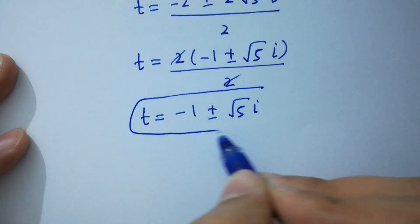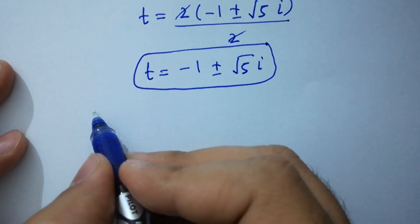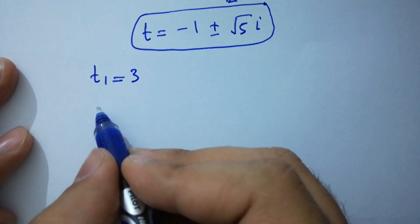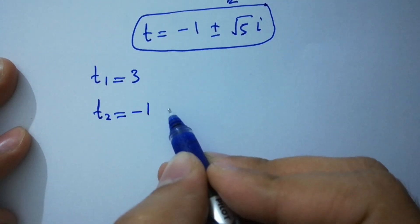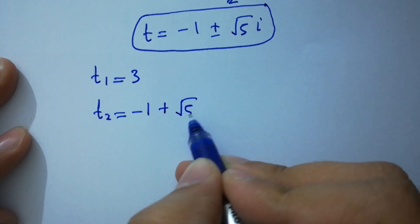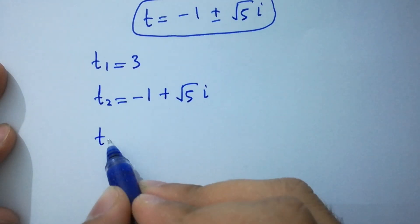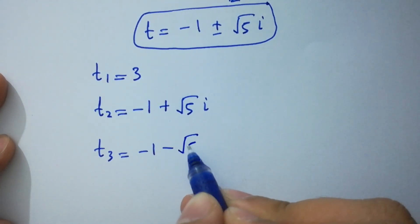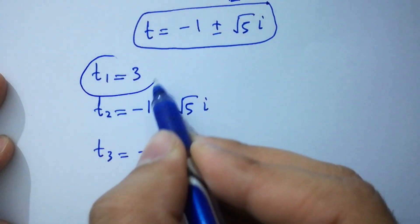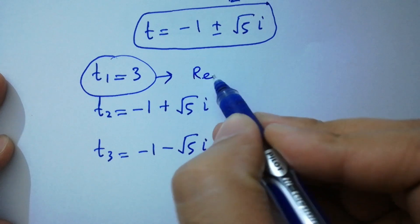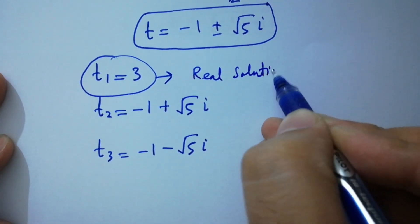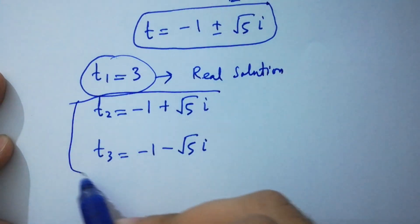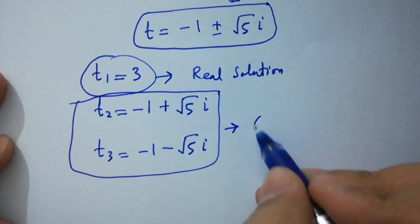So we have t₁ equals 3, t₂ equals minus 1 plus square root of 5 times i, and t₃ equals minus 1 minus square root of 5 times i. Here t₁ equals 3 is the real solution, and t₂ and t₃ are complex solutions.